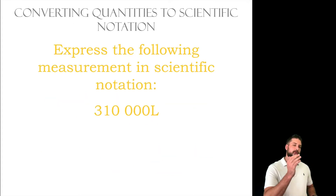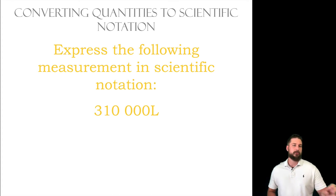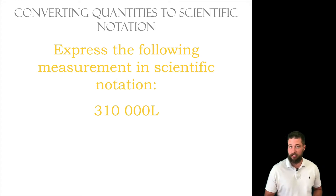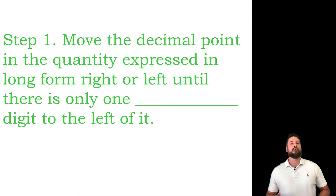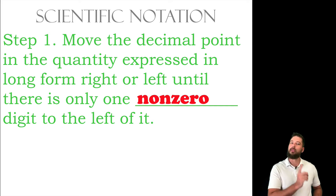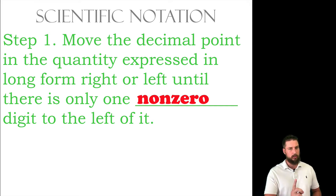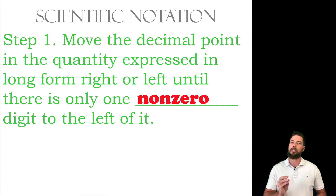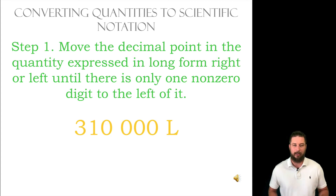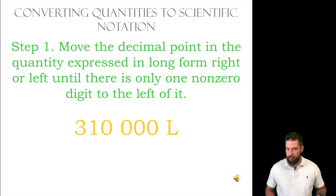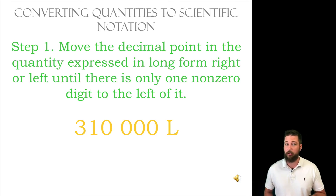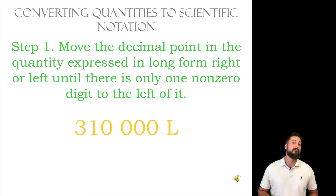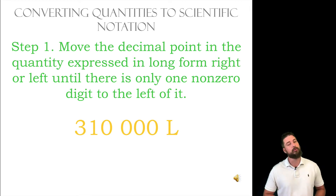Now we're going to learn how to do that with the specific number 310,000. We're going to take 310,000 and convert it to scientific notation. The first step is to move the decimal point to where there is one non-zero number to the left of the decimal. When you look at this number there's no visible decimal point, but it is there — it's just at the very end of the number.